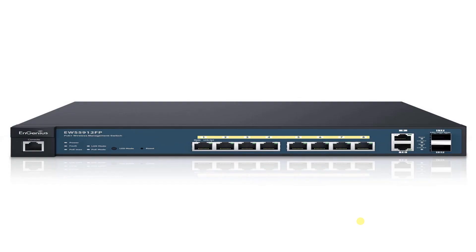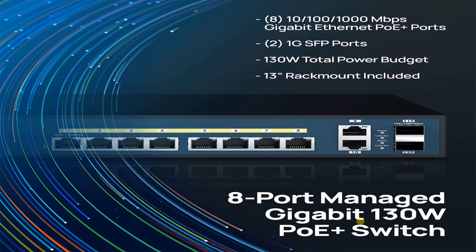This is how your NGINIUS WLC looks like. This model is EWS 5912. Discussing about the specifications, this particular model has eight Gigabit Ethernet PoE ports, along with that it has two 1 GB SFP ports. The total power budget is 130 watts, and it includes mounting kits so you can mount this in the rack.